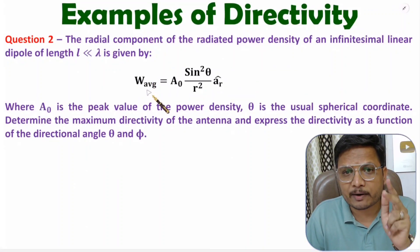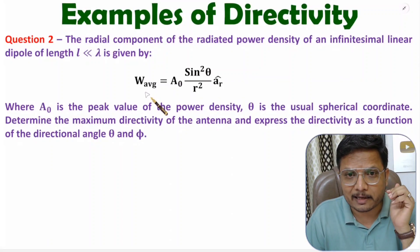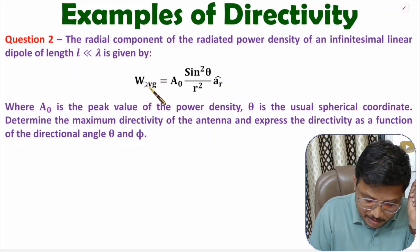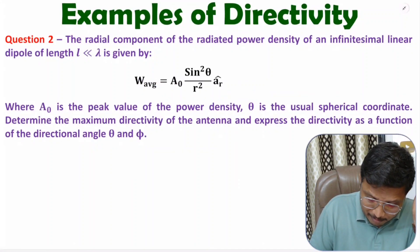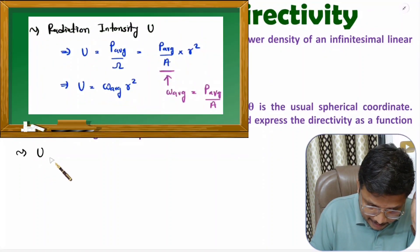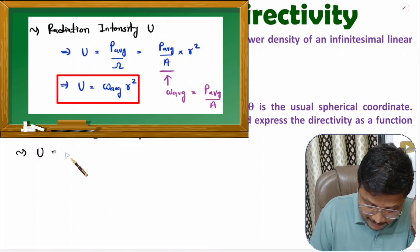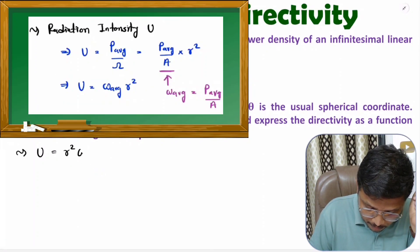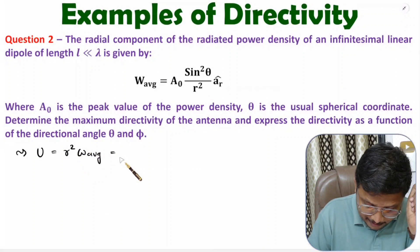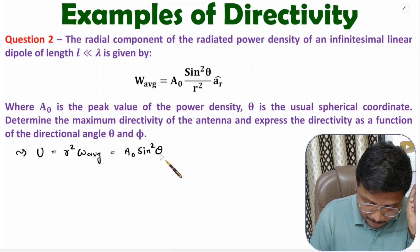Based on power density, one cannot calculate directivity directly. First, you will have to identify radiation intensity based on average power density. Radiation intensity is R² × W_avg. So if you substitute W_avg, the R² cancels and radiation intensity becomes A₀·sin²θ.